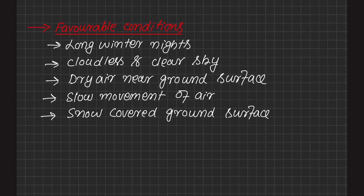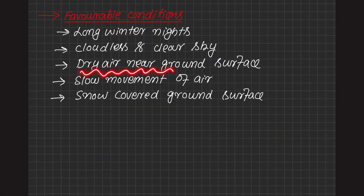The next favorable condition is dry air near the ground surface. Dry air actually limits the absorption of radiated heat from the earth's surface. As a result, heat is not retained in the ground layers and they become cold compared to the upper layers.